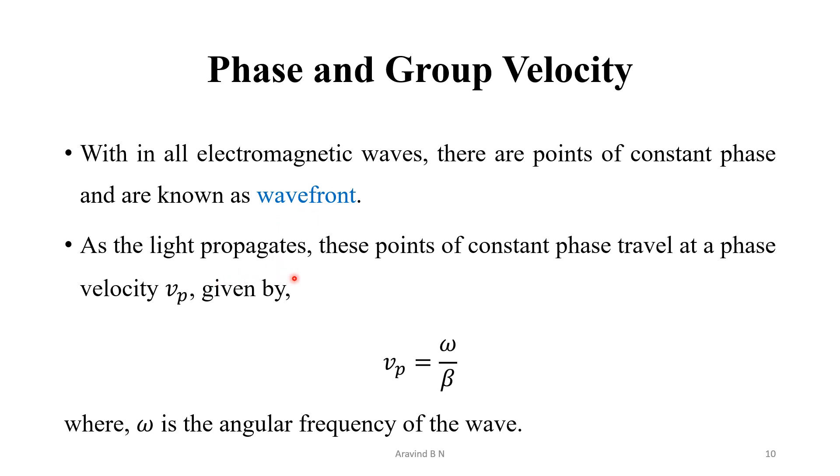So, in all electromagnetic waves, there are points of constant phase and they are known as the wave front. Now, as the wave propagates, these points of constant phase travel with the velocity known as the phase velocity given by the term vp. And this vp is defined as vp is equal to omega divided by beta, where omega is the angular frequency of the wave.